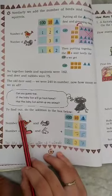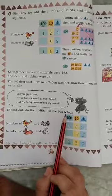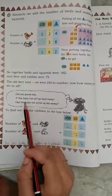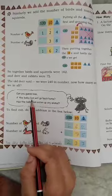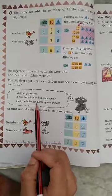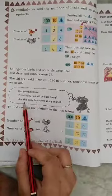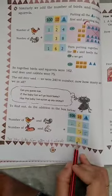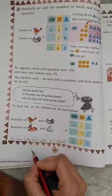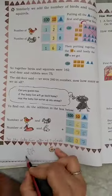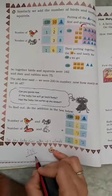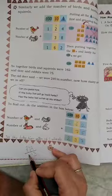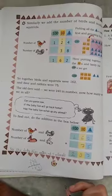To find out, do the addition in the box below. Can you guess now, has the baby lion eaten any animal? Our total was 240 and we counted 237. We will minus, so 240 minus 7 is 3, it borrowed 10, then 3 minus 3 is 0. Three animals he ate.